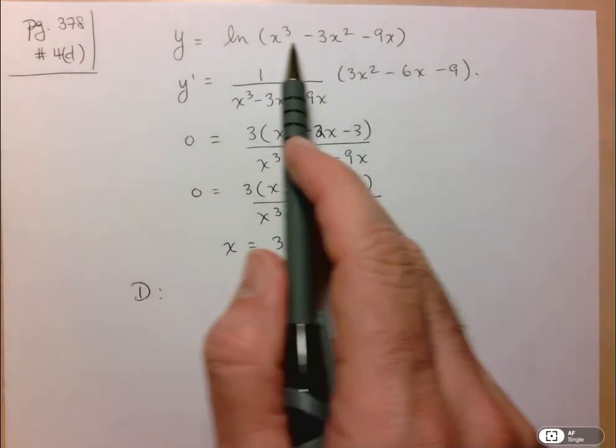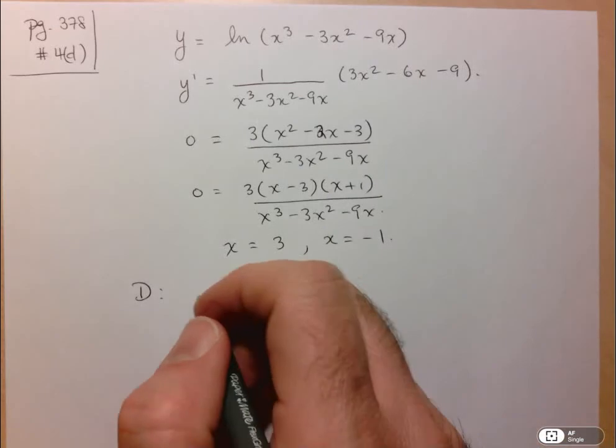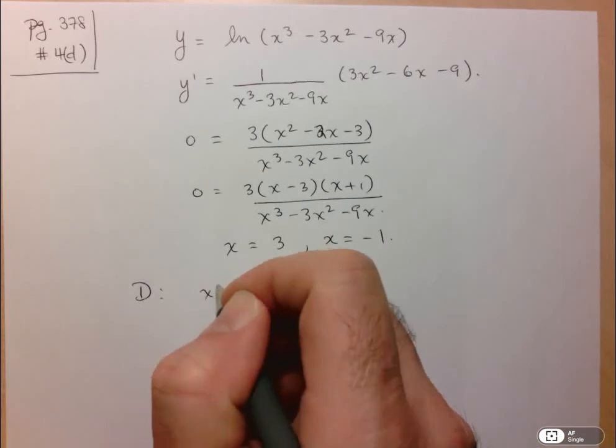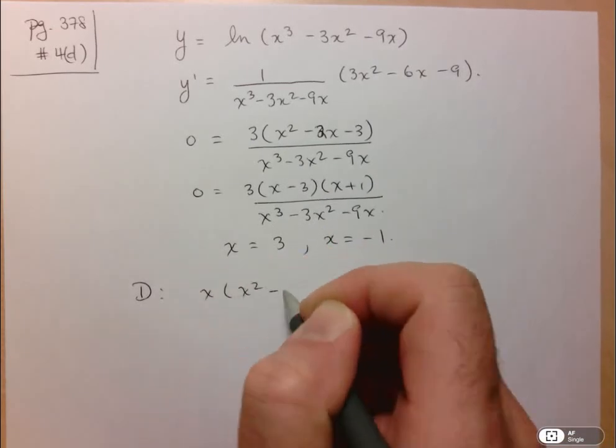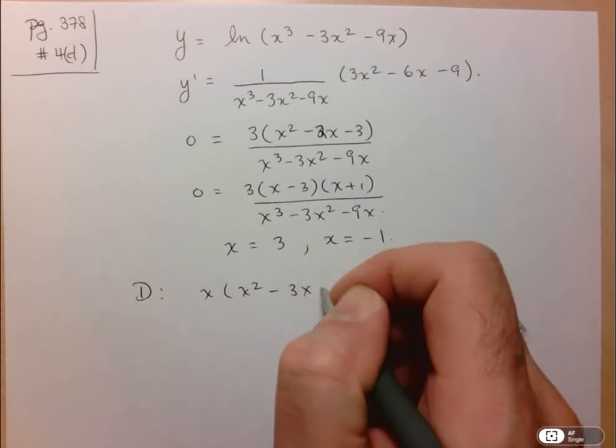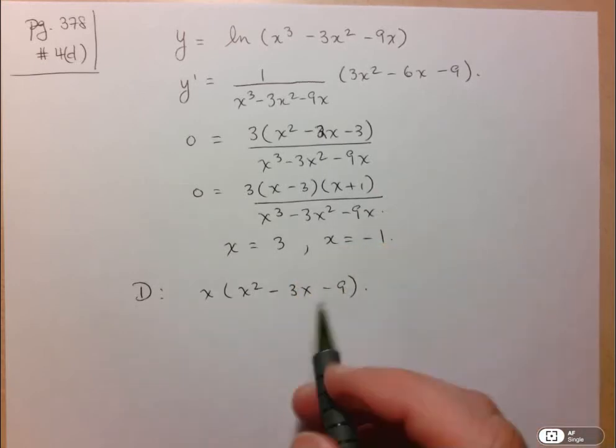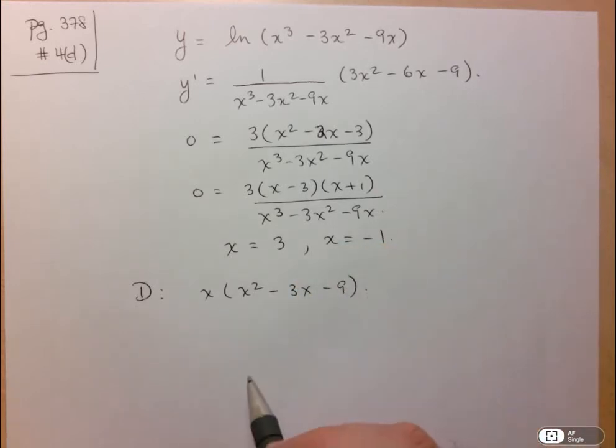So I need to figure out where this thing is positive. So let's factor it. We've got x, we're left with x² - 3x - 9. And I could see that that's not factorable.